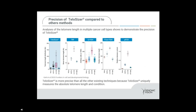Looking at multiple cancer cell types to determine the precision of Telosizer — HeLa, IICF, U2OS, and HT1080 — we actually get much greater precision in Telosizer with telomere length distribution compared to TRF, QFISH, FlowFISH, and real-time PCR.